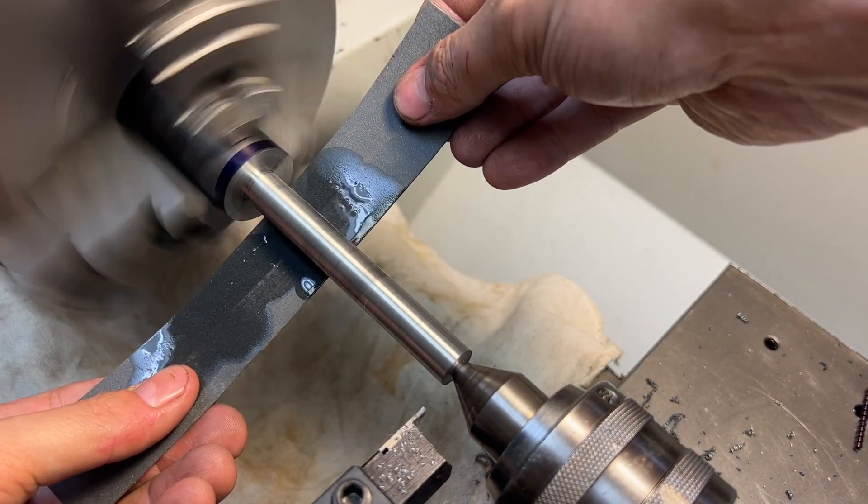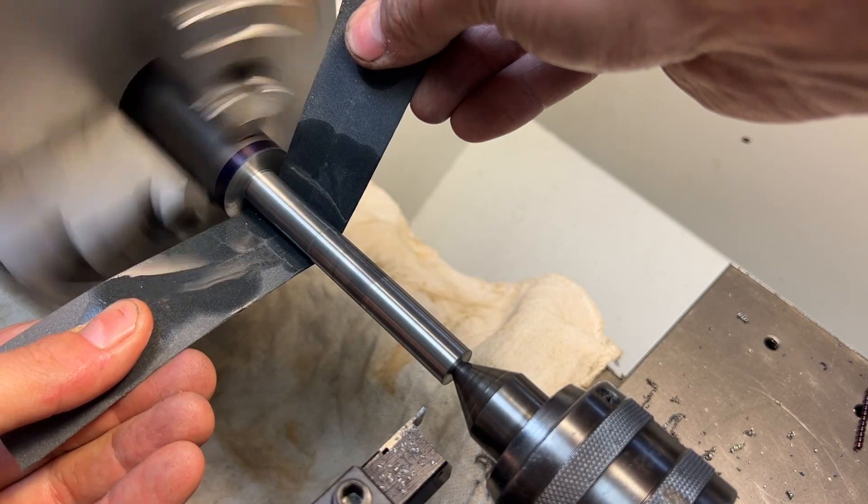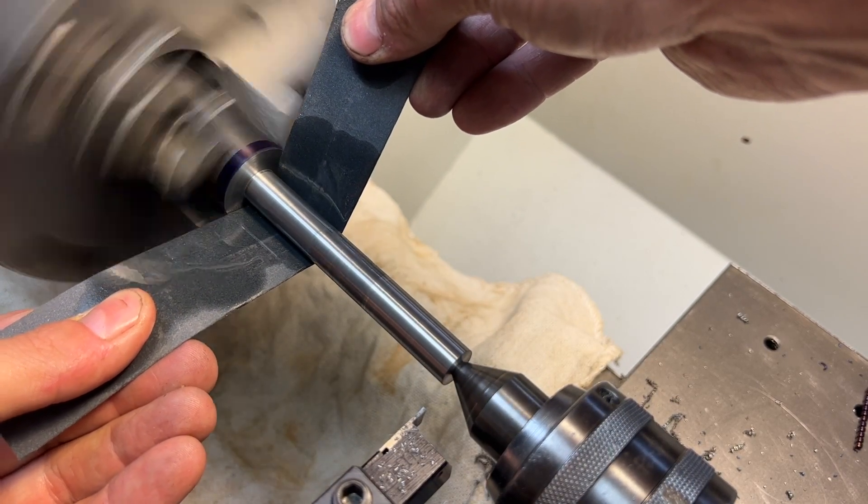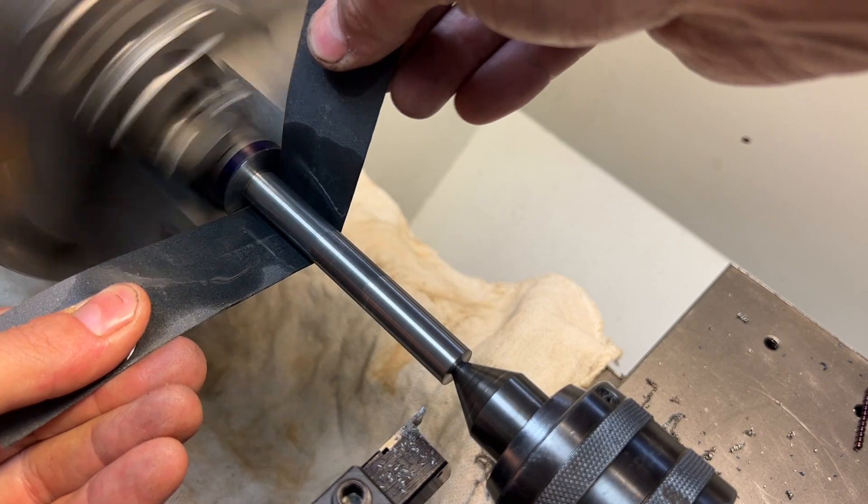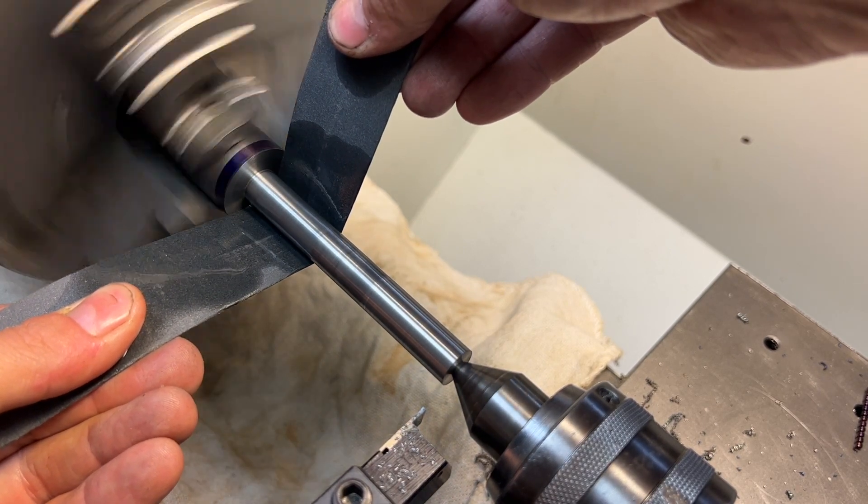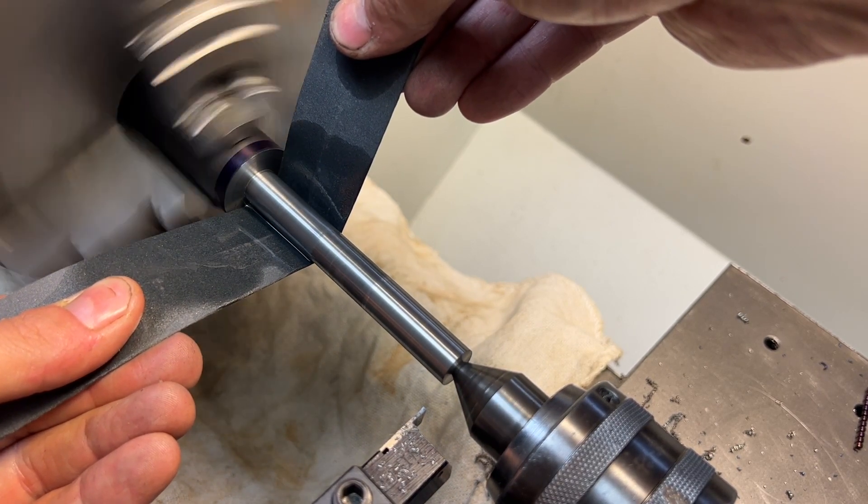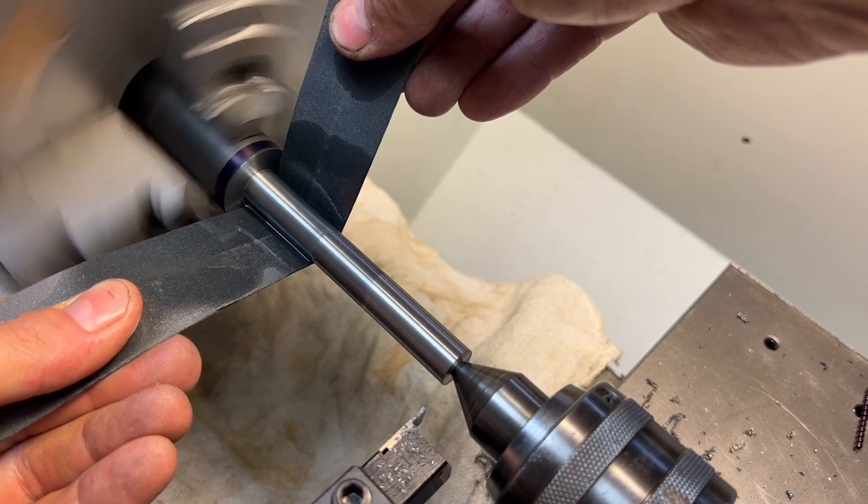And once that's done, we can use our emery cloth to take this bearing race section down to its final diameter. For that, we are shooting for five hundred and one thousandths and five tenths.